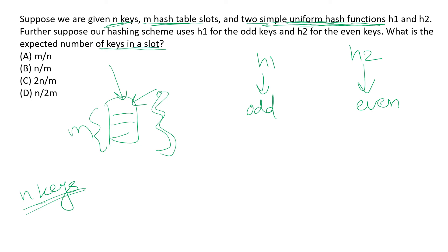Hence, the expected number of keys in any of these slots will be total number of keys which is n upon total number of available slots which is m. So the expectation in this question will be n by m, which is option B.